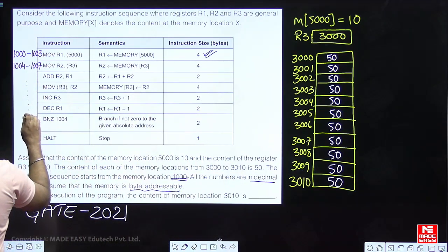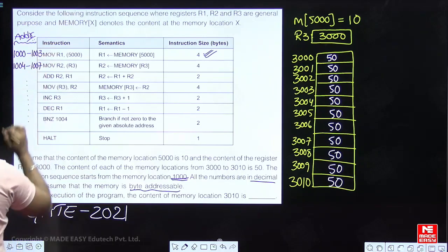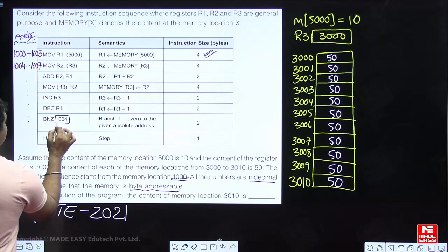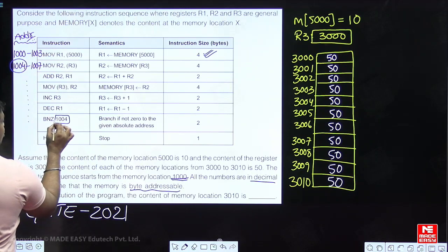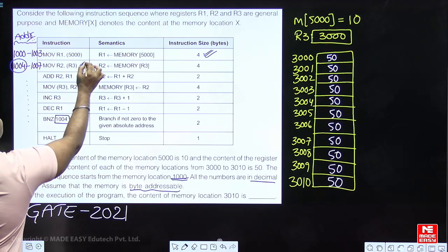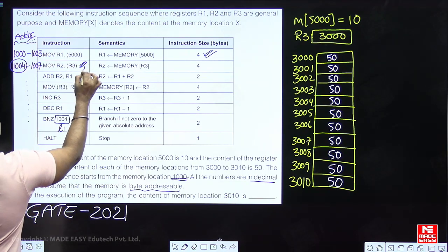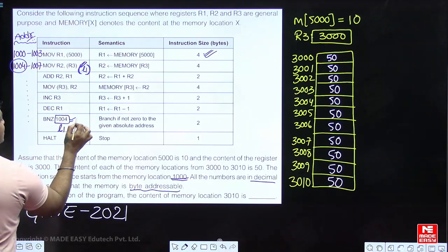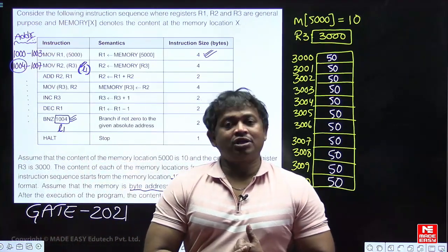The BNZ (branch if non-zero) instruction targets address 1004. Address 1004 is the starting address of the second instruction. So when the condition is true (non-zero), control transfers to the second instruction at location 1004.